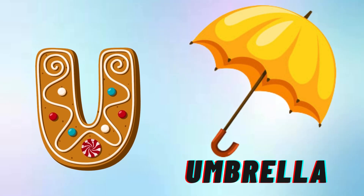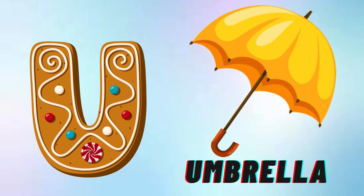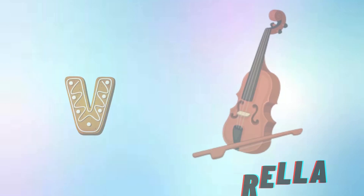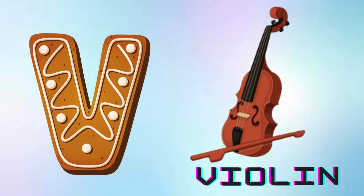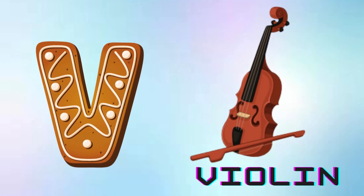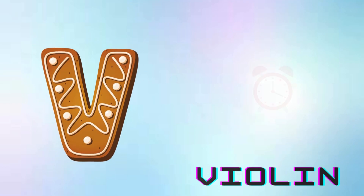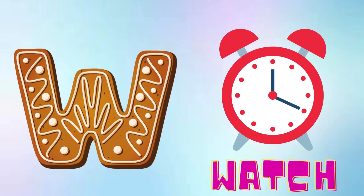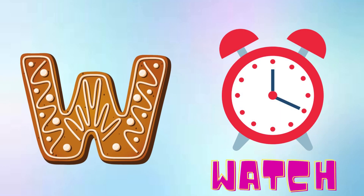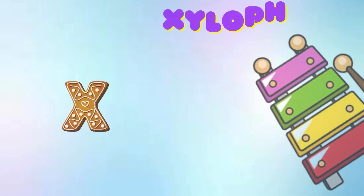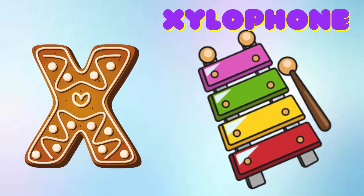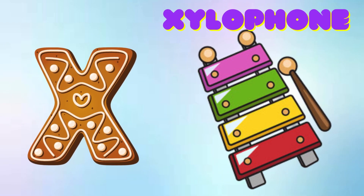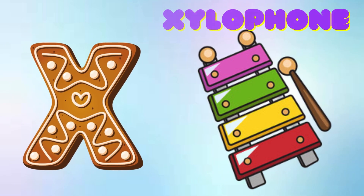U is for Umbrella, U-U-Umbrella. V is for Violin, V-V-Violin. W is for Watch, W-W-Watch. X is for Xylophone, X-X-Xylophone.